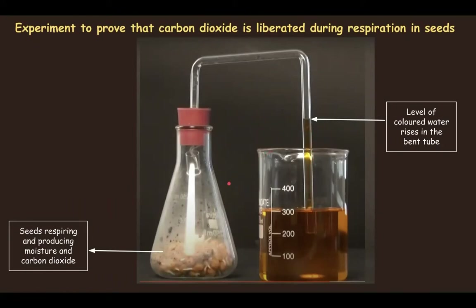Why does this happen? The seeds are respiring, and on respiration they produce moisture, carbon dioxide, and heat. The moisture condenses on the inner surface of the conical flask. The carbon dioxide produced is absorbed by potassium hydroxide. When carbon dioxide is absorbed, a partial vacuum is created, due to which the colored water rises inside the bent tube. So this experiment clearly proves that carbon dioxide is liberated during respiration.